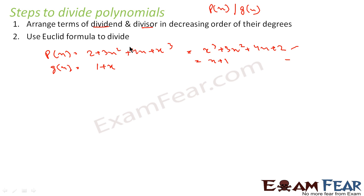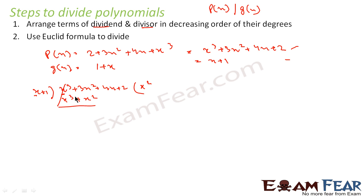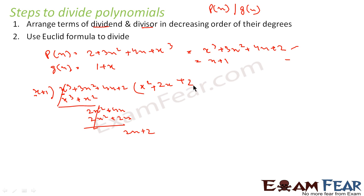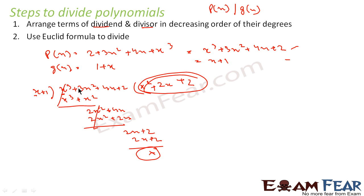Using the Euclid formula, we divide x³ + 3x² + 4x + 2 by x + 1. Multiply x with x² to get x³: write x² as the first term of the quotient, giving x³ + x². Subtracting: 3x² − x² = 2x² + 4x. Multiply x by 2x to get 2x² + 2x, subtract to get 2x + 2. Dividing gives 2, remainder is 0.